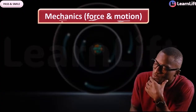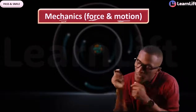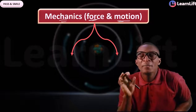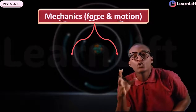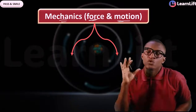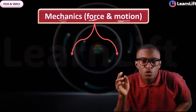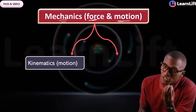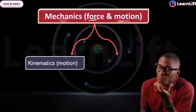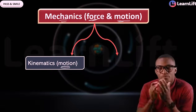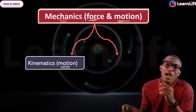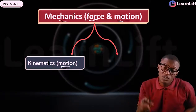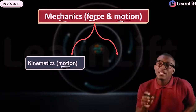Mechanics is divided into two parts: one part focuses on just motion, another part focuses on force. The part that focuses on motion is called kinematics. Kinematics is the branch of mechanics that talks about motion. The other part that focuses on force — which is the cause of motion — is called dynamics.